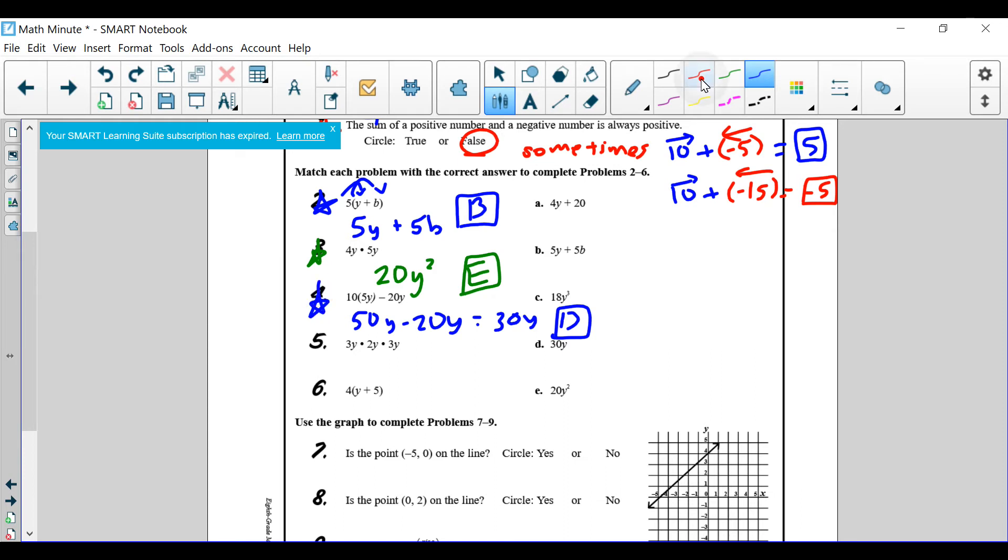Let's continue. Number 5 is talking about 3y times 2y times another 3y. We're gonna look at the coefficients, meaning the number in front of the variable. So we go 3 times 2, that's gonna be 6. y times y is gonna be y squared times another 3y is equal to 3 times 6, that's gonna be 18. And y squared times y, that's gonna be y to the third. Which one does that match? That matches c.